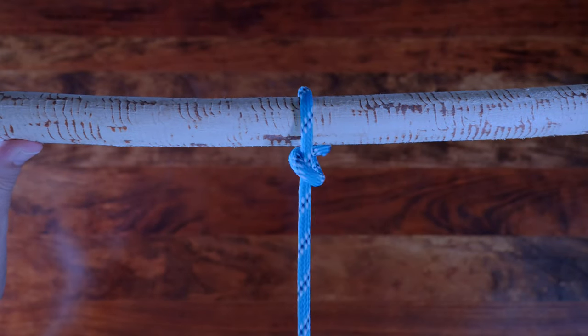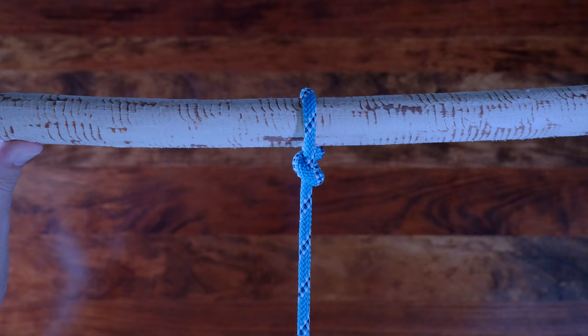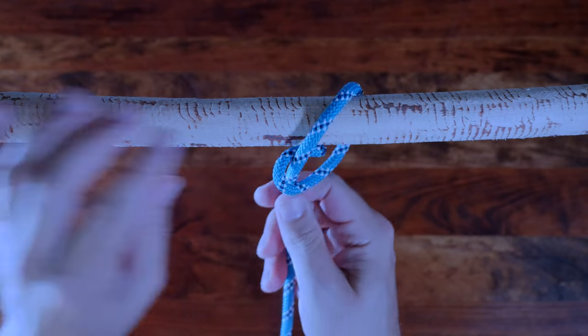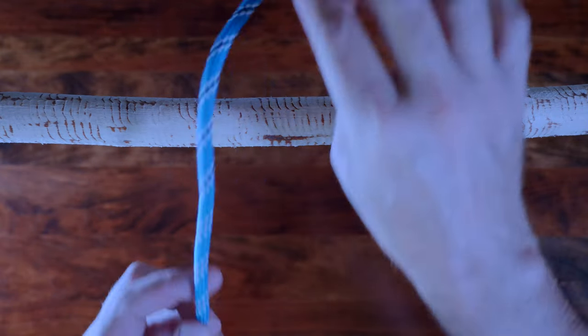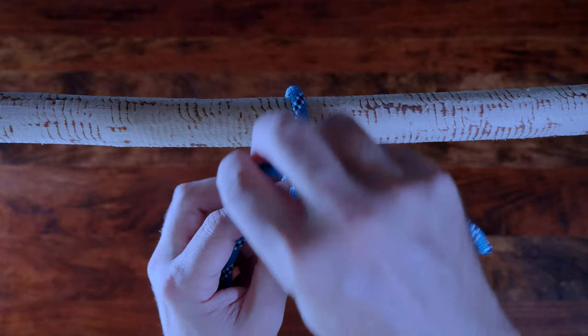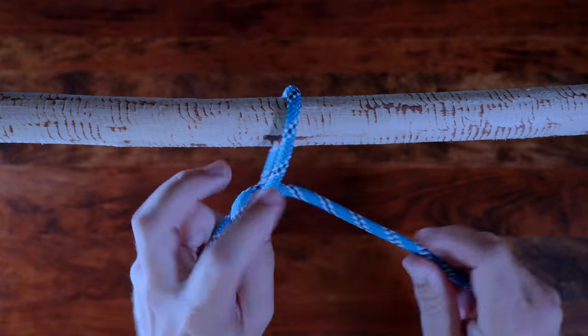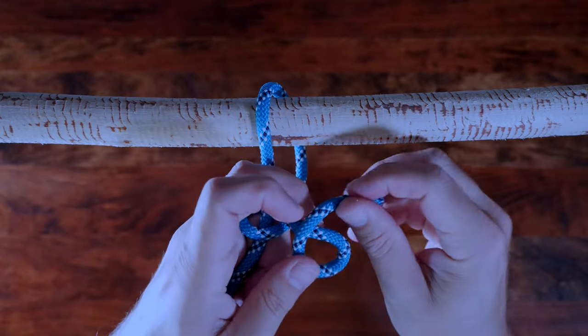You can see as I pull on the line, the half hitch tends to slip. It's very easy to make the half hitch a more reliable knot. All you need to do is double it up and make a two half hitches knot. I'm going to put a link in the description to two half hitches knot as well.